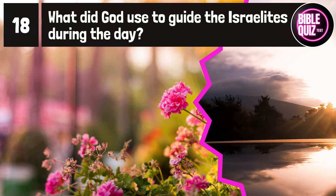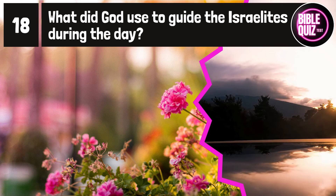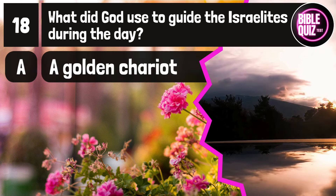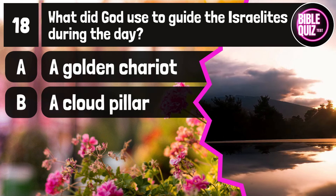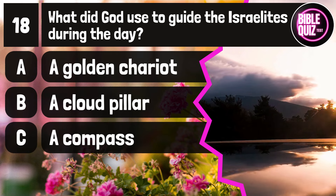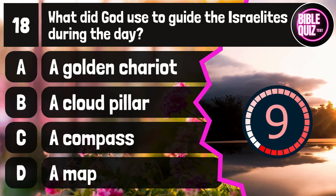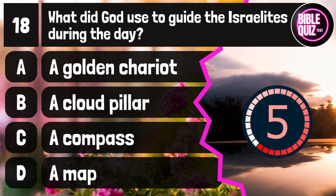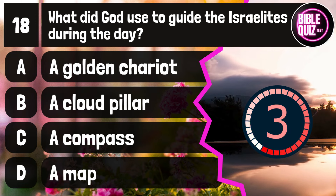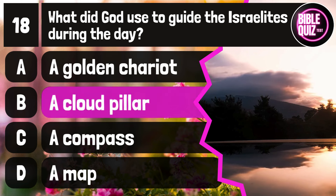Question number 18. What did God use to guide the Israelites during the day? Option A: A golden chariot. Option B: A cloud pillar. Option C: A compass. Option D: A map. Time to think. The answer is option B: A cloud pillar.